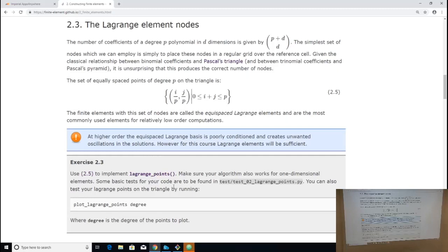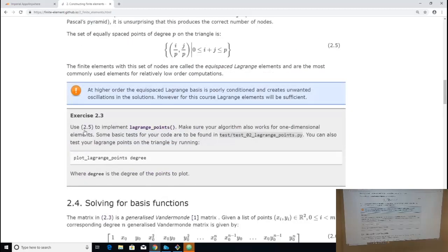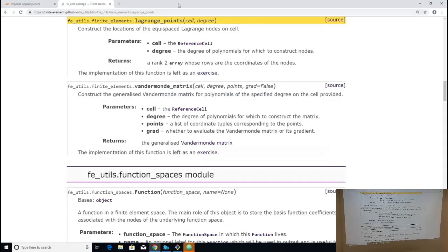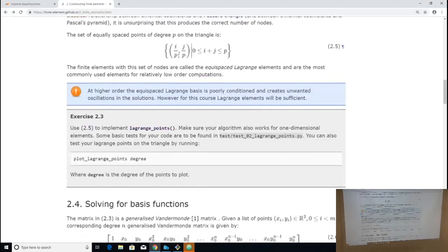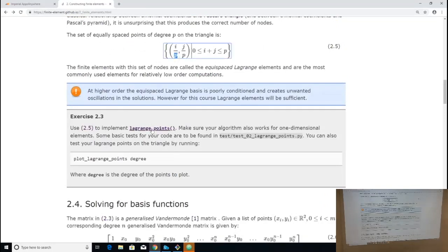Exercise 2.3 is very much like the exercise from last time. There's a formula, in this case, it's this formula. And there is a Lagrange points function which you need to implement. Lagrange points takes in a cell object. You'll remember we met these earlier. So by inspecting the cell object, you can know how many dimensions you're in, how many vertices there are, and so on. And it also needs a degree because obviously the number of points you have is dependent on the degree according to this formula. So the degree is P.